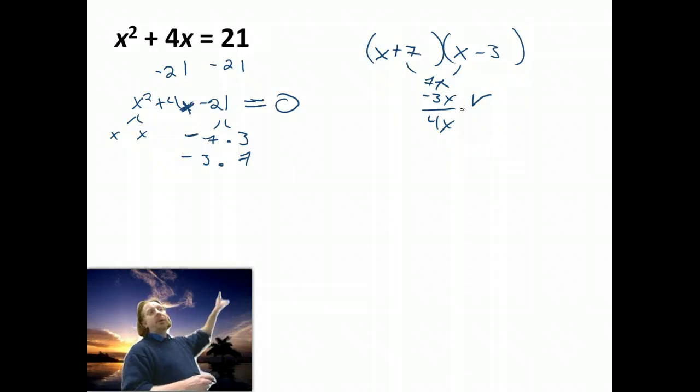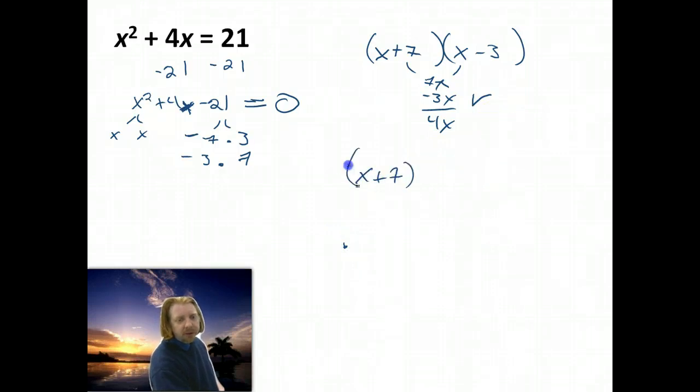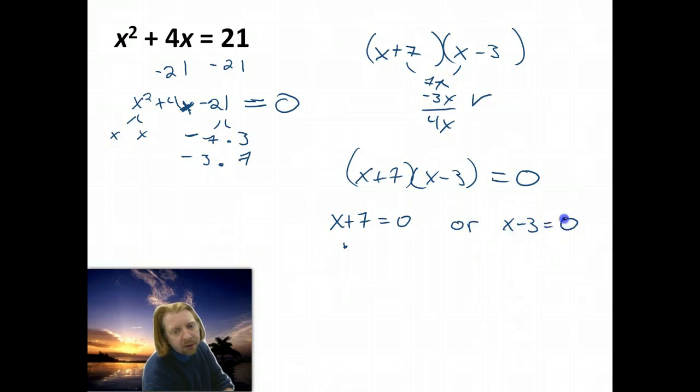Guys, are we okay with the factoring? All right. So now I have taken x squared plus 4x minus 21 and factored it into x plus 7 times x minus 3. So x plus 7, x minus 3, and that equals 0. And from what we've just been talking about, if I have two products equaling 0, I can split them into two equations. It's x plus 7 is 0, or x minus 3 is 0.